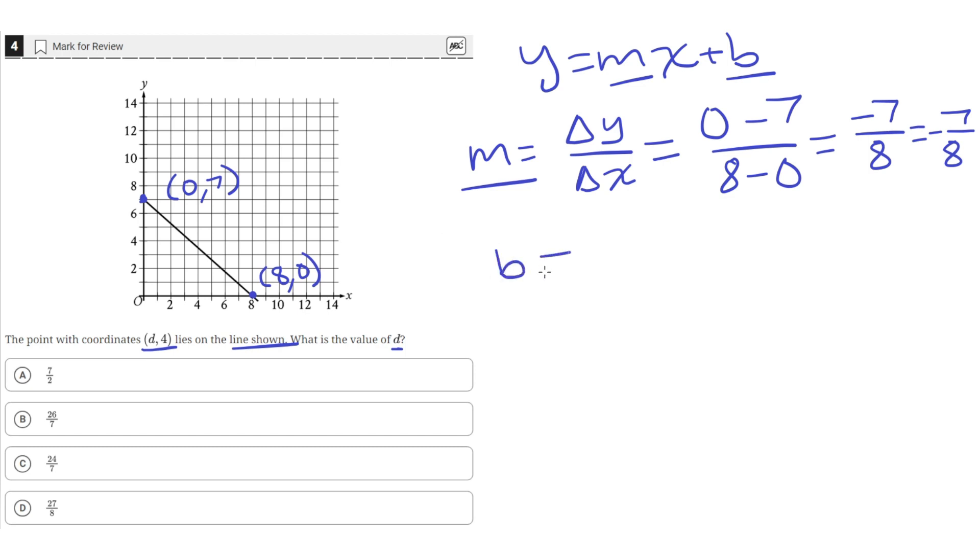Now the value of the y-intercept, the b-value, is just the y-value at the point where the line crosses the y-axis. So the y-axis is this vertical axis here, and it crosses at this point (0, 7). So that means the value of our b-value is just 7.